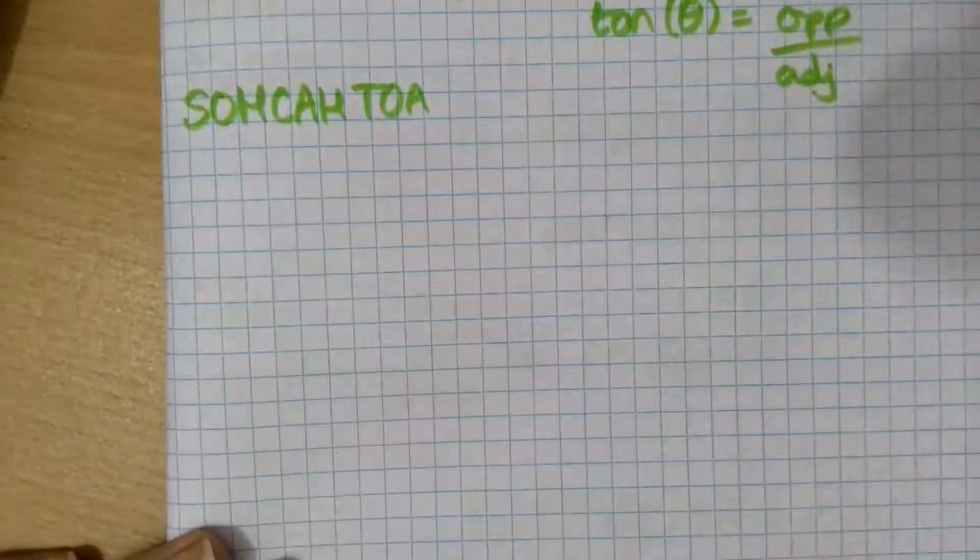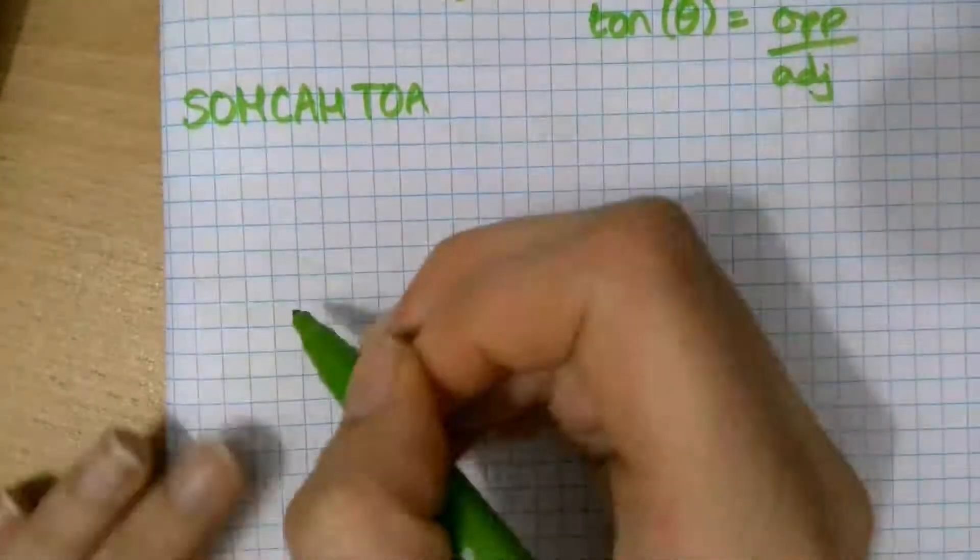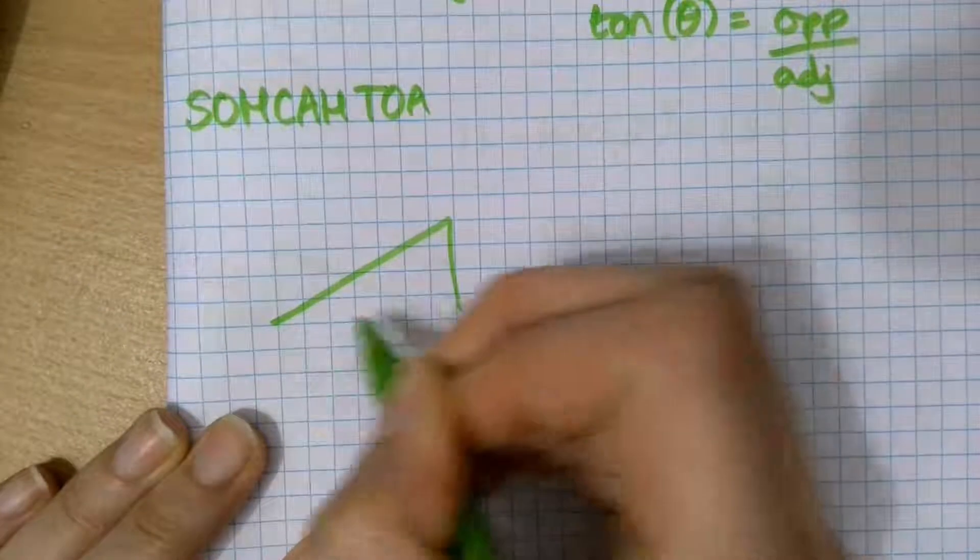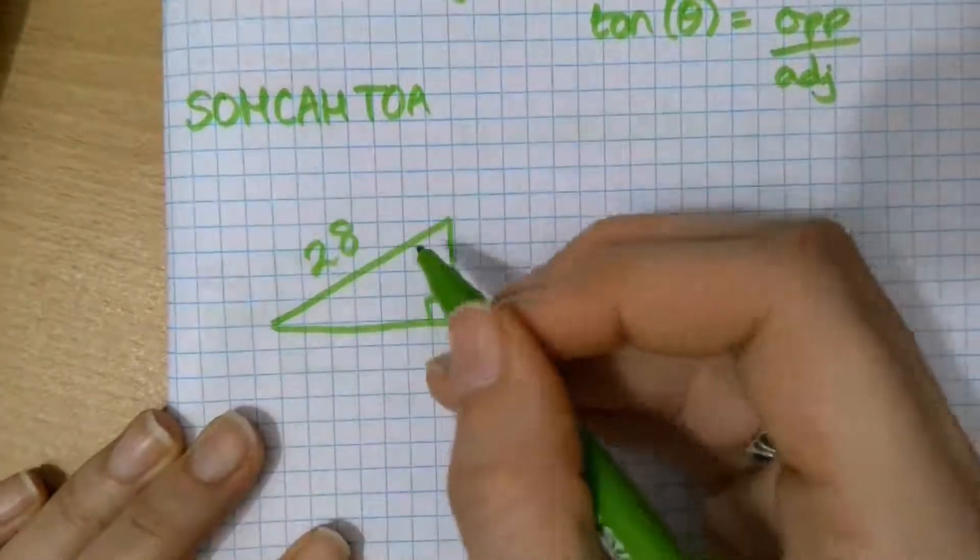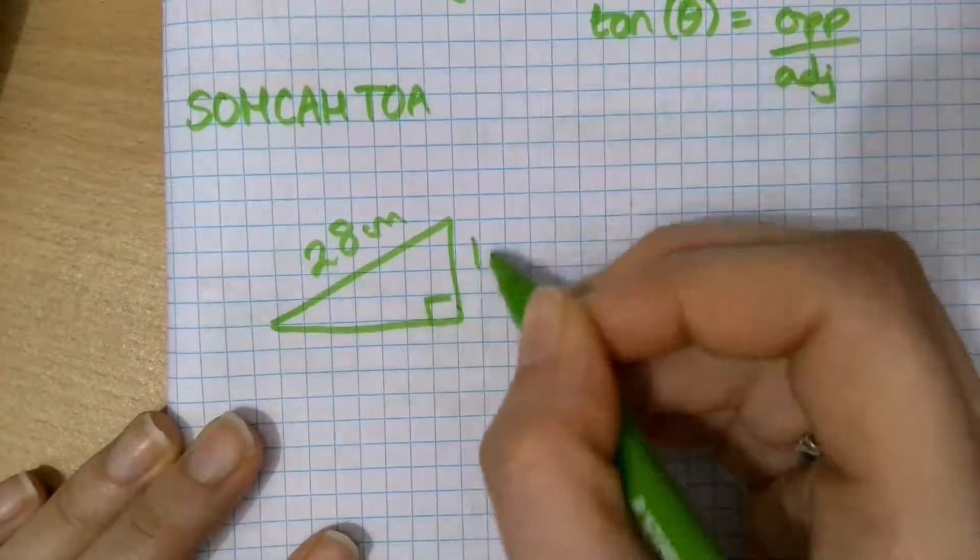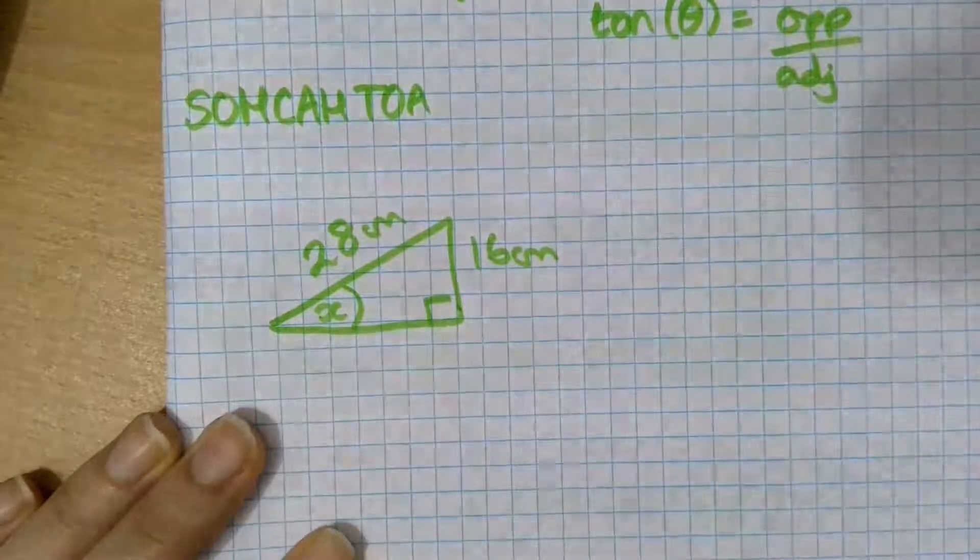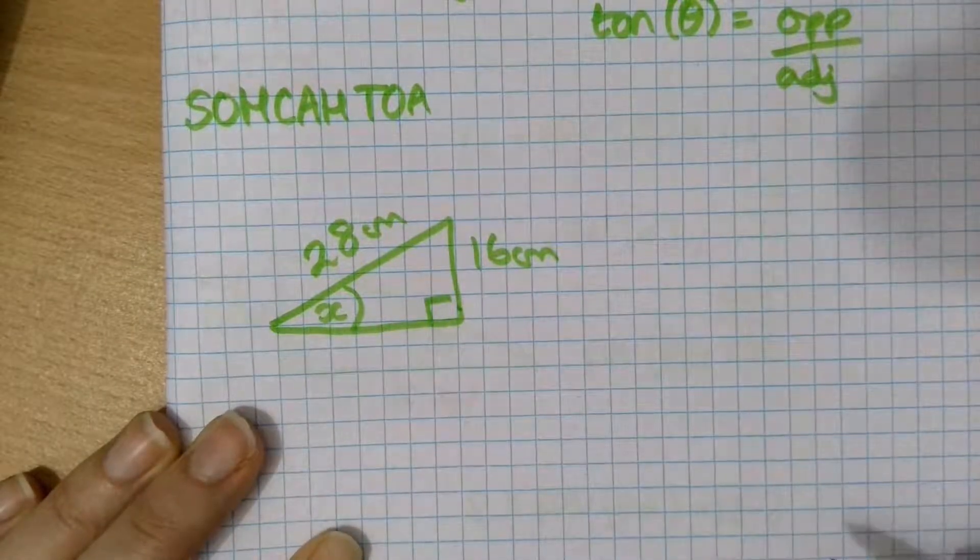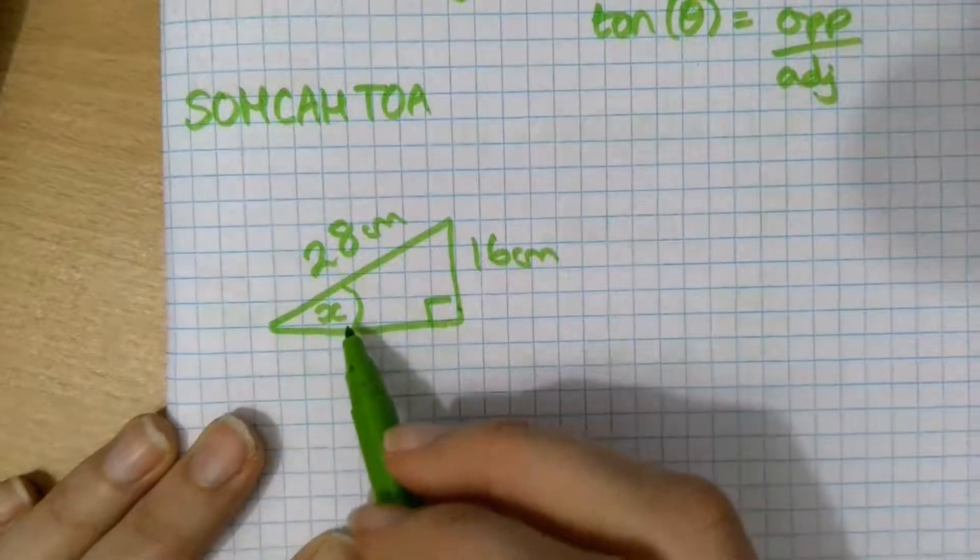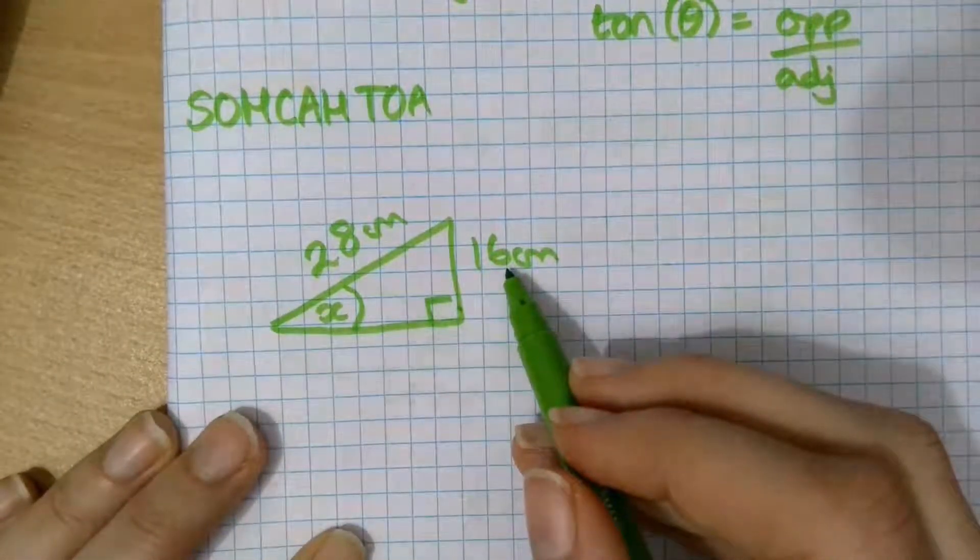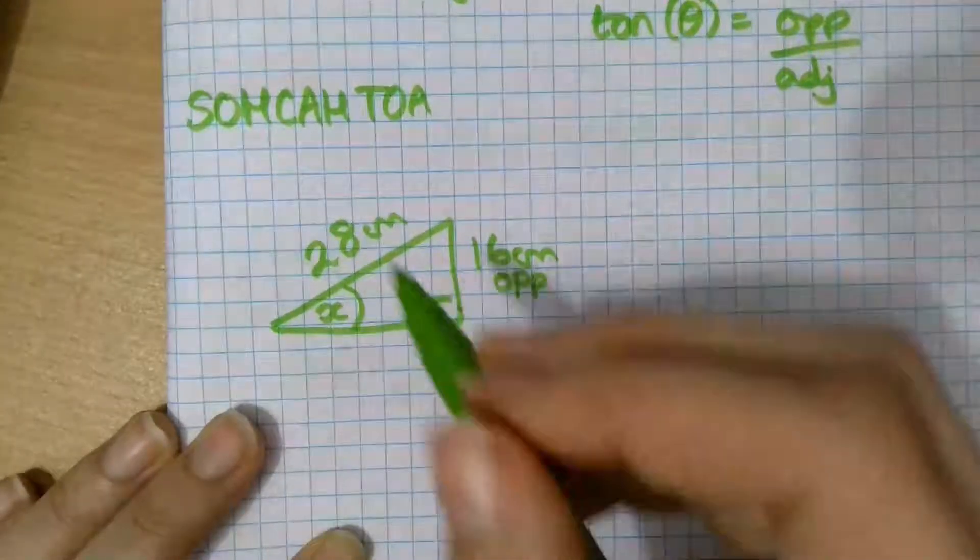So let's take ourselves a question. Here I have a triangle. It's right angled. I know that this side is 28 cm. I know that this side is 16 cm. And I want to find this angle here. First thing we do with any trigonometry question is we label our sides. So, x is my angle, which means that 16 is opposite x. And 28 is the hypotenuse.